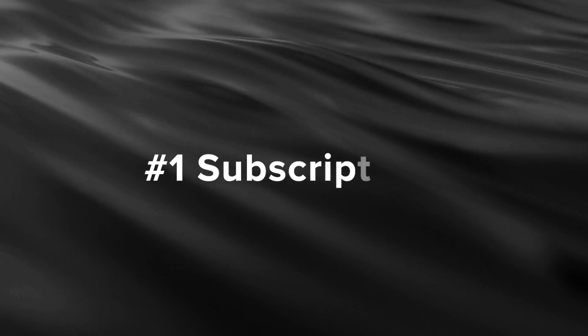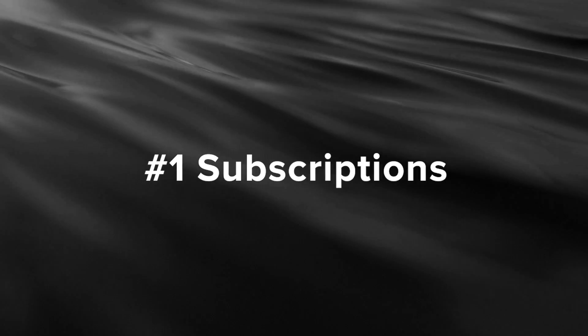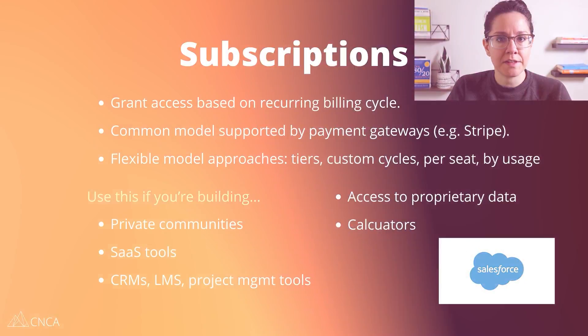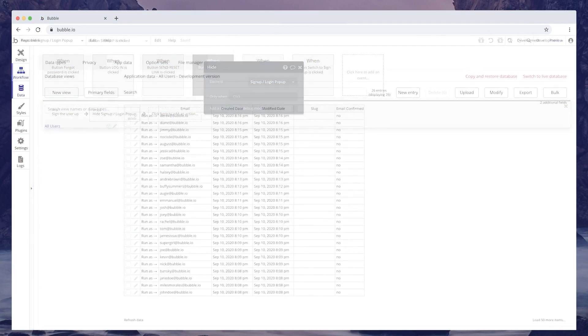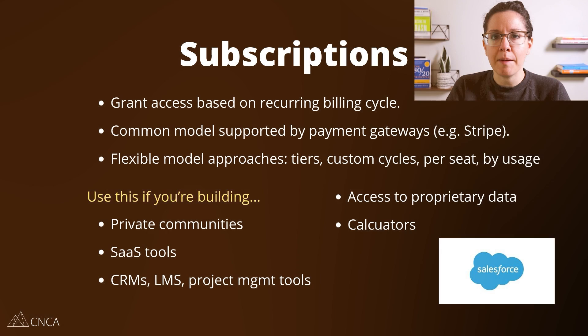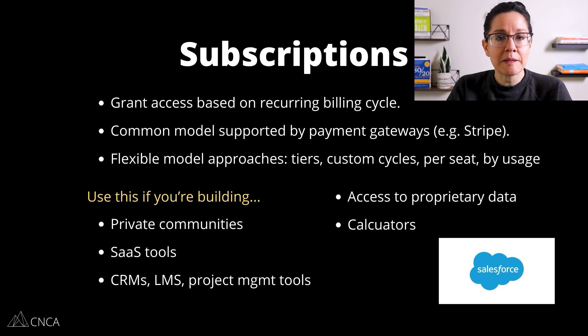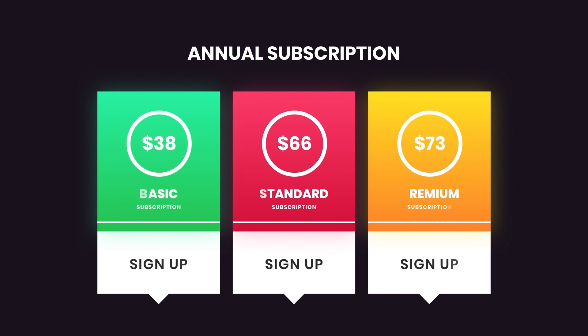The first and probably the most popular way of generating revenue is through subscriptions. The Bubble platform itself uses subscription plans for you to access an editor and start building your application. With subscriptions, you grant users access to your app through a recurring billing model. This is good if you know that your users will need to access your app on a consistent basis. Most payment gateways will support subscription systems, and you typically have flexible models. You can create custom pricing tiers where users get more access the higher the tier or the more they pay every billing cycle.